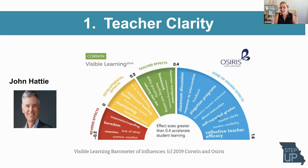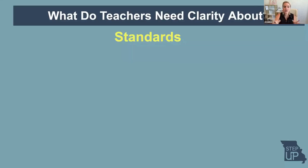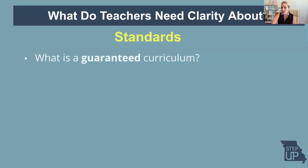I'm tying self-reported grades to this idea of student clarity. We're going to think about how students can assess themselves — you've heard 'student assessment-capable learner.' How do they judge themselves along that continuum where they would know where their grade or their proficiency would be? Here's the research behind teacher clarity: Hattie has shown it has a great effect size for teachers and students. So then the question becomes, what do students need clarity about? Standards.